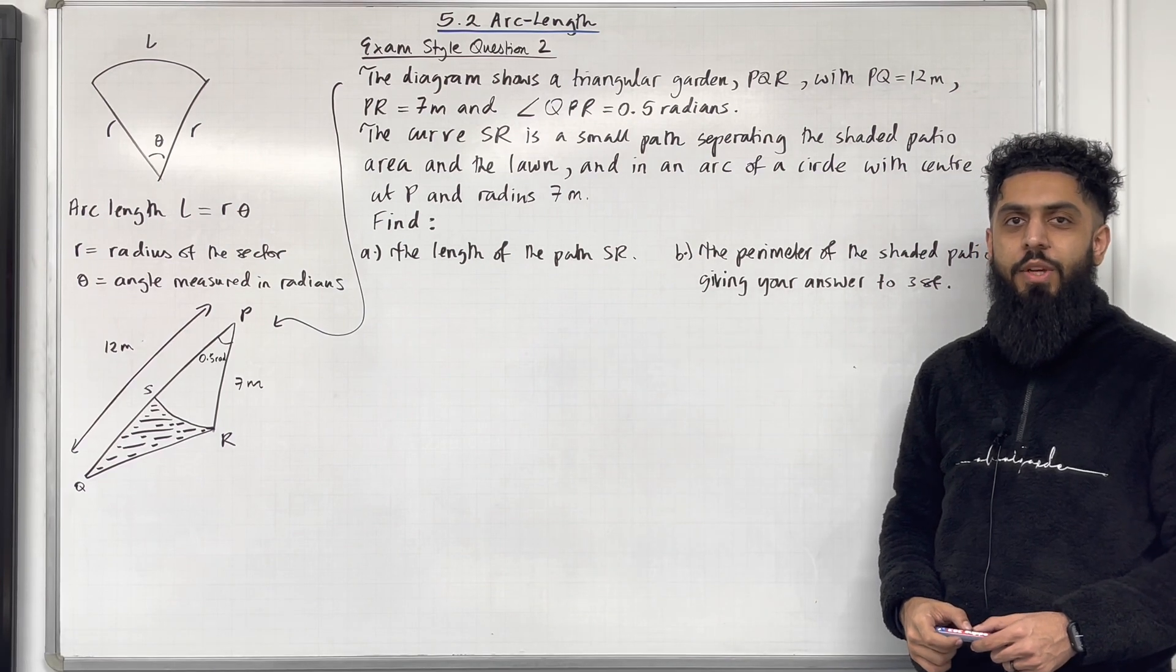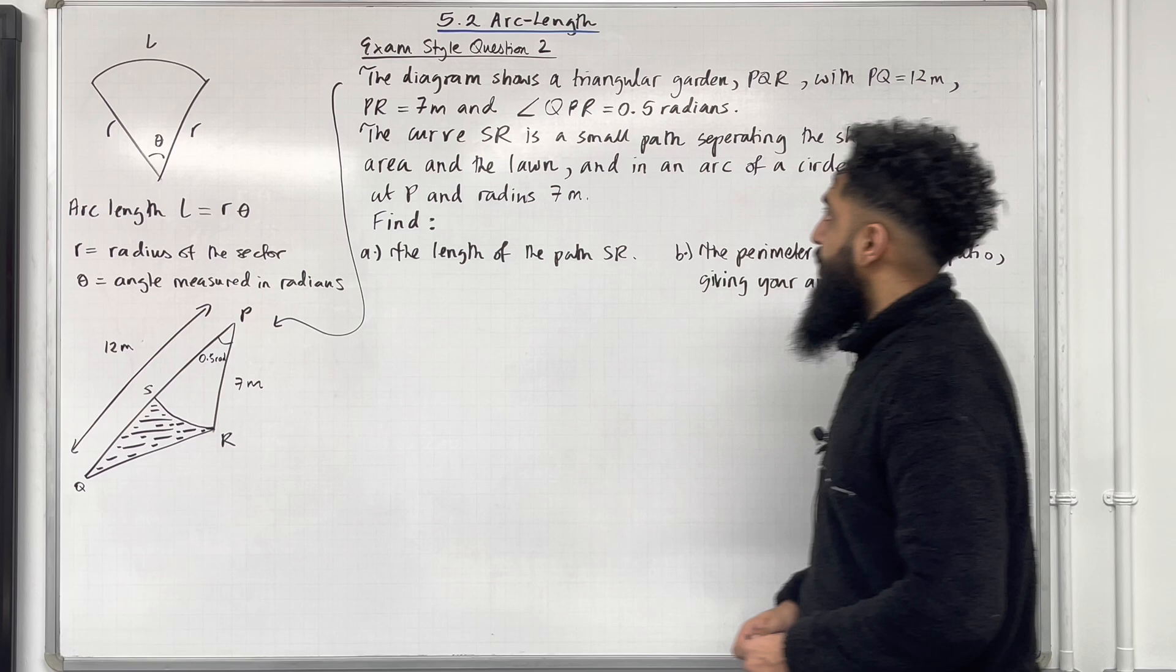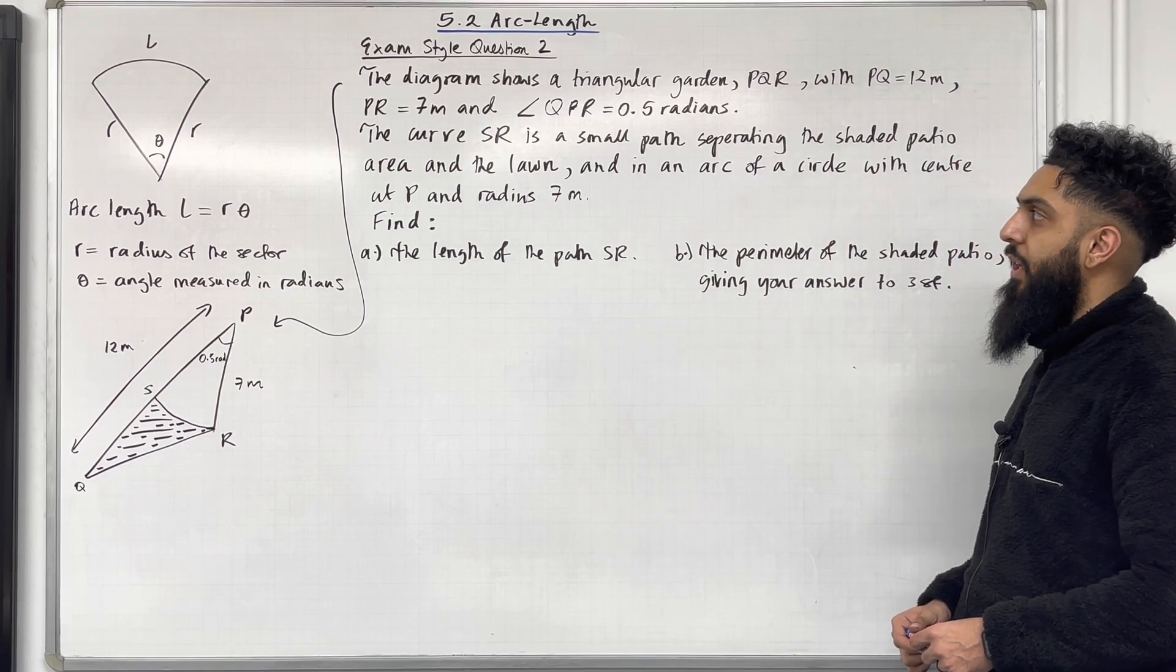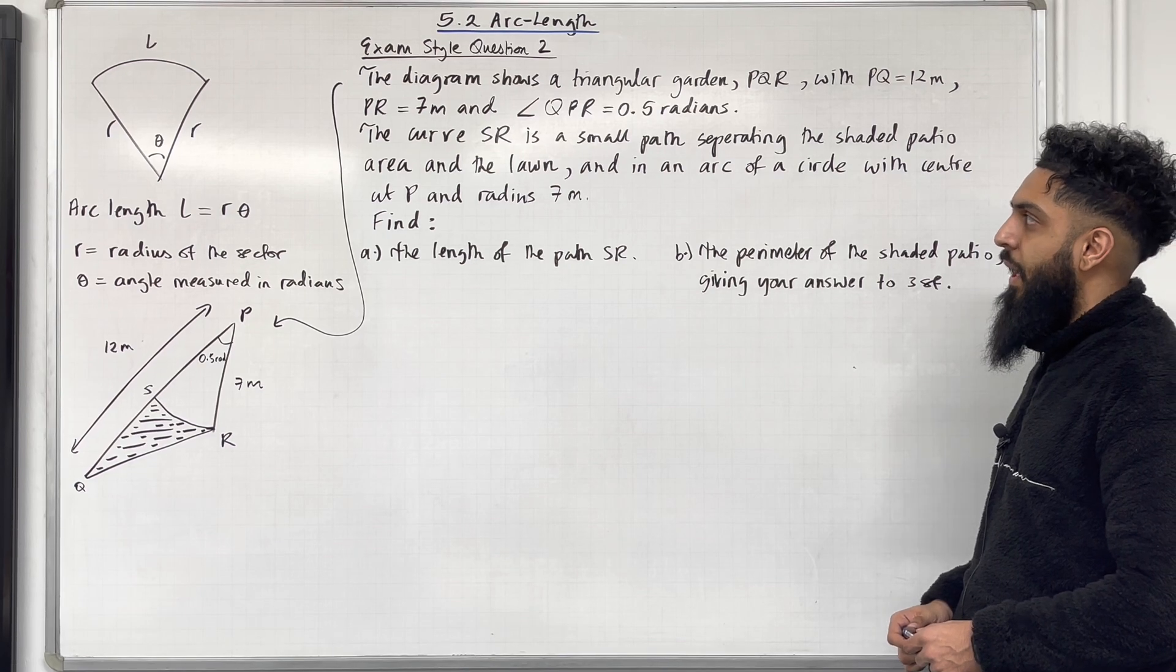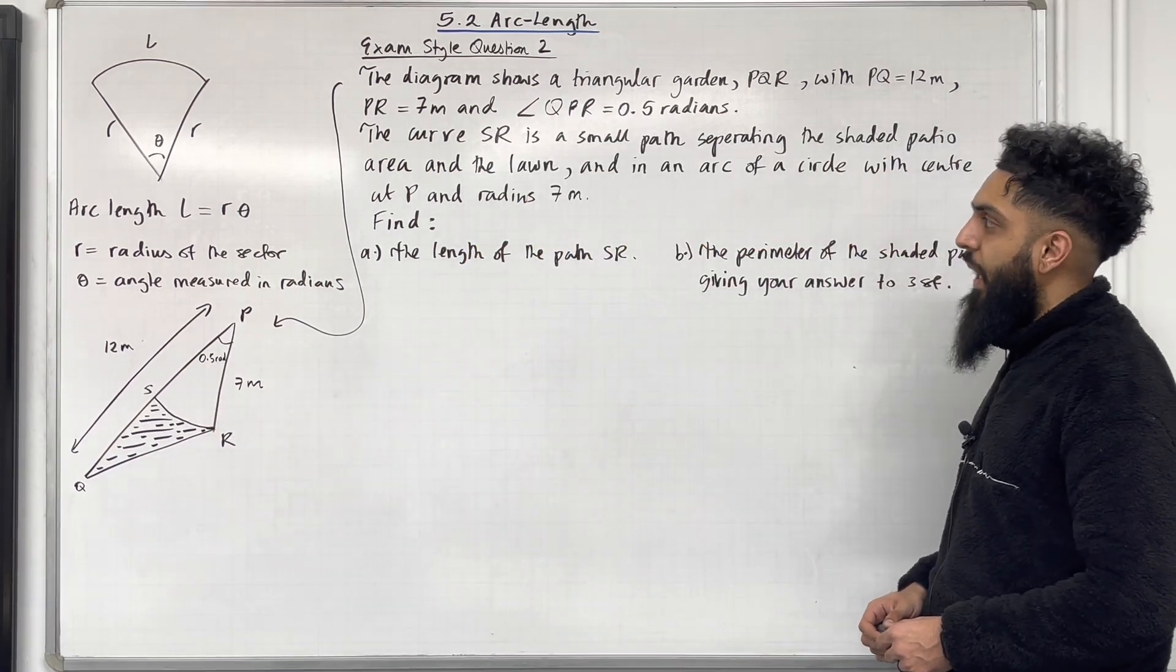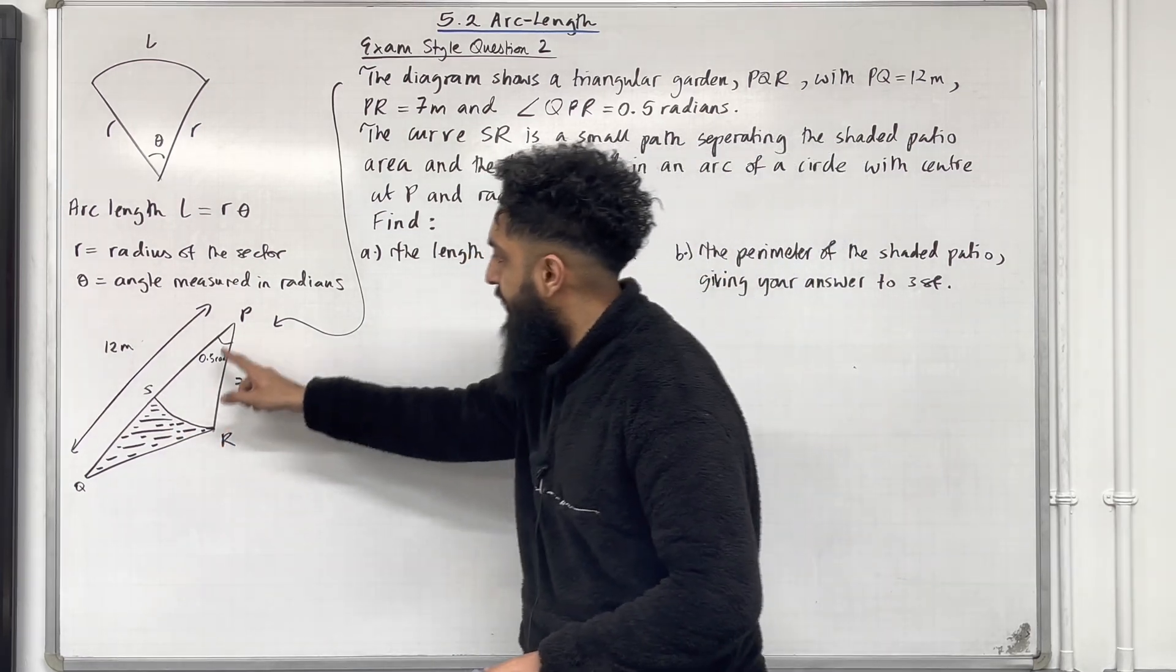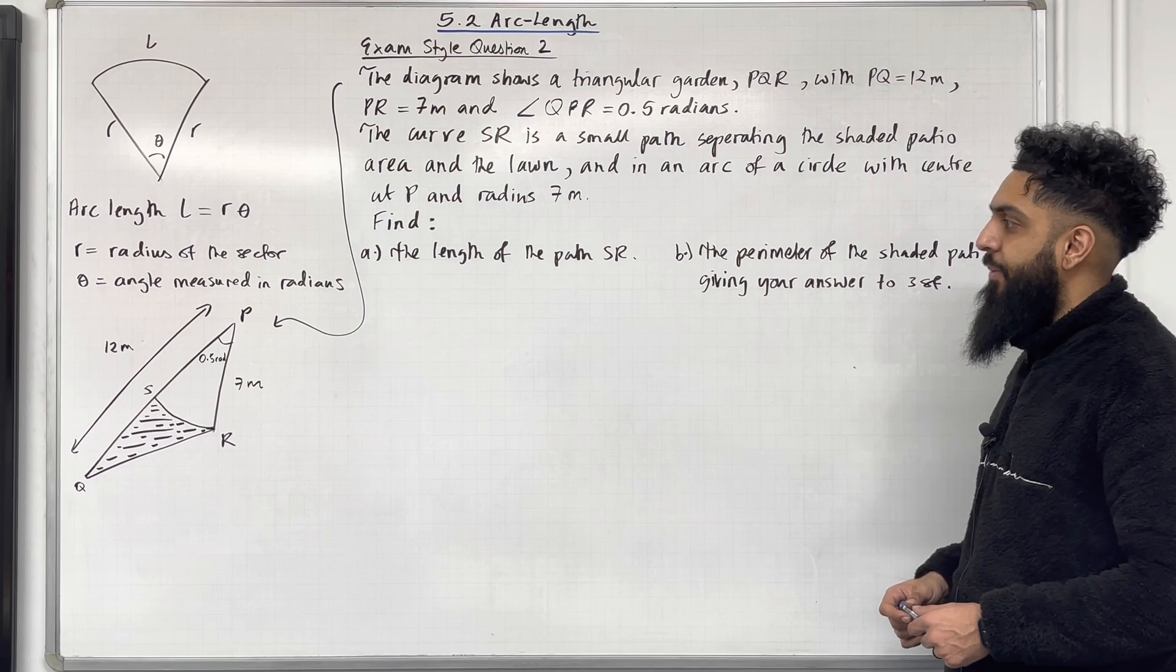Moving on to exam style question 2. The diagram shows a triangular garden PQR with PQ equal 12 metre, PR equal 7 metre, and angle QPR equal 0.5 radians. The curve SR which is an arc length is a small path separating the shaded patio area. Here is the shaded patio area and the lawn. Here is the lawn. And in an arc of a circle with centre at P.